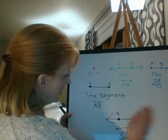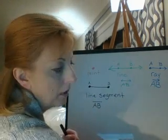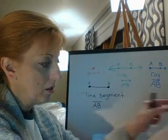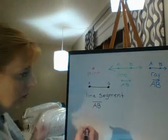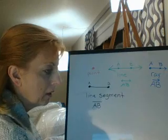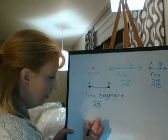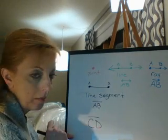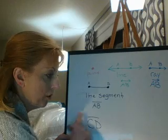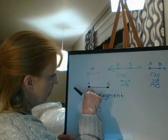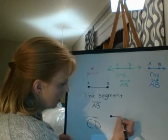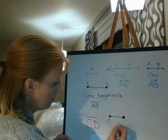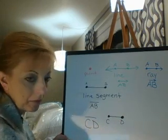Let's look at page 874. On this page, they give you something they want you to draw — they have you draw line segment CD. In order to draw that line segment, we would want to make two endpoints with a line in between. We're going to label one point C and the other one D.